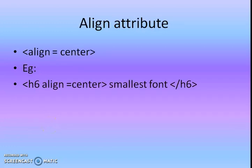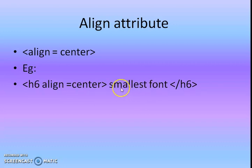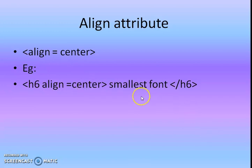The next one is the align attribute. You can set your text to either left side, right side, or center. To align your text, use the tag align — for example, align equals center. In this example, h6 align equals center means the smallest font will be displayed at the center of the line. When you give right it will be right-aligned, when you give left it will be left-aligned. These are the different align options.